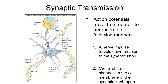What we're going to get into today is what happens when that action potential gets to the very end of the axon, when it gets to the synapse or the synaptic knob, and then needs to cross the synapse to cause the connected neuron to actually generate an action potential or electrical signal. This process is known as synaptic transmission.